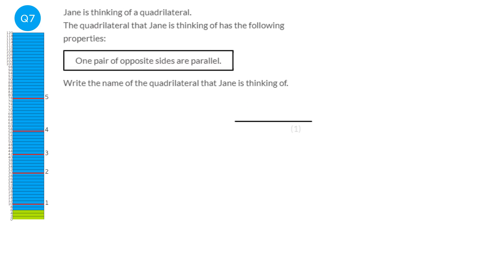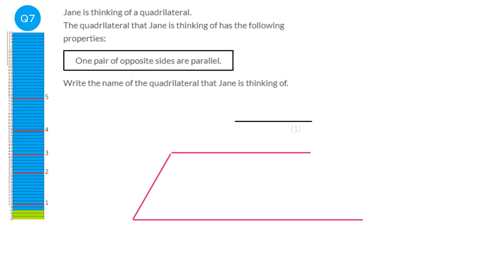If we try to draw a quadrilateral with one pair of parallel sides and join them up so it has four sides, the shape we draw will always be a trapezium. So our answer is a trapezium. A rectangle or square actually has two pairs of parallel sides. The definition of a trapezium is that it has just one pair of parallel sides, and any quadrilateral with exactly one pair of parallel sides is a trapezium.